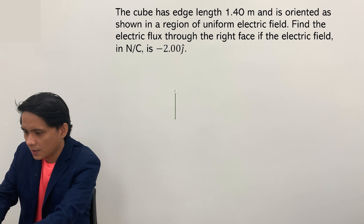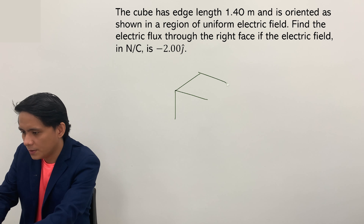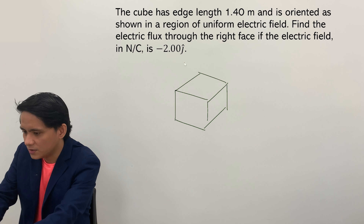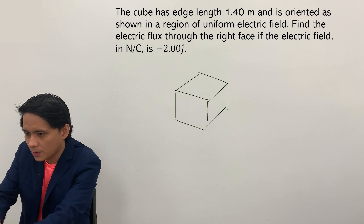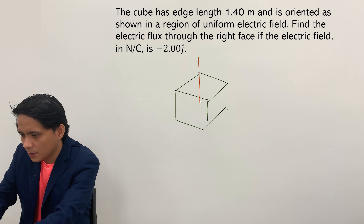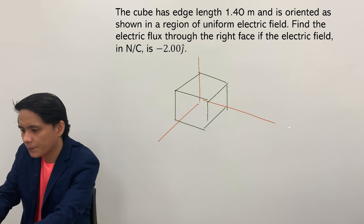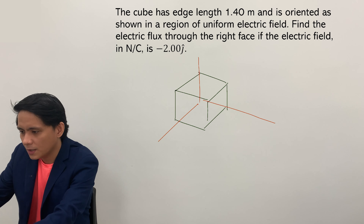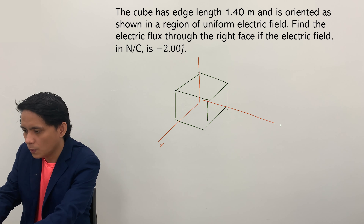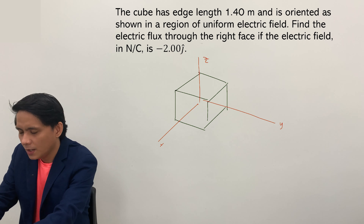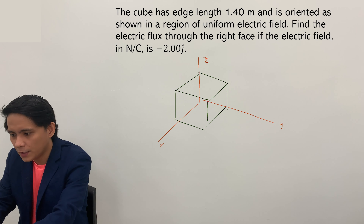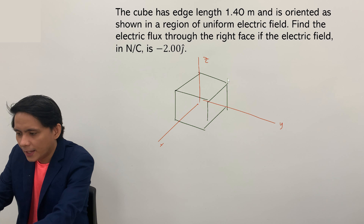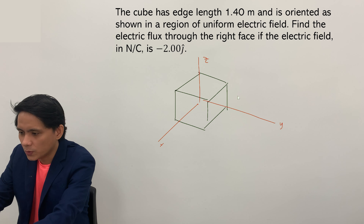Welcome back. For this example, we have a cube oriented with the 3-axis shown here — the x, y, and z-axis. For this particular figure, the length of the side of the cube is equivalent to 1.4 meters.